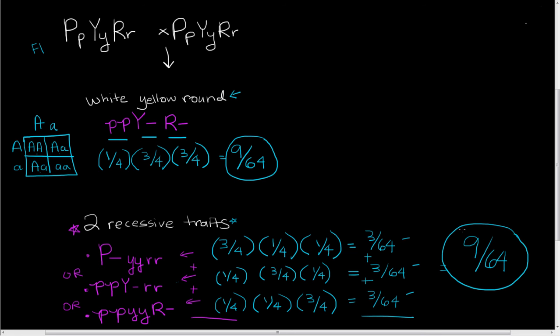So nine sixty-fourths is our probability of having exactly two recessive traits. You can calculate a bunch of other kinds of probabilities just using these simple methods.